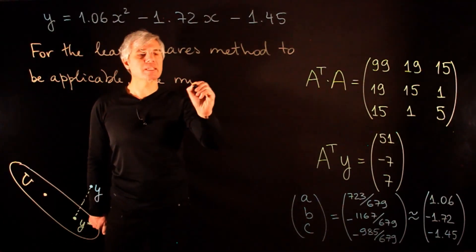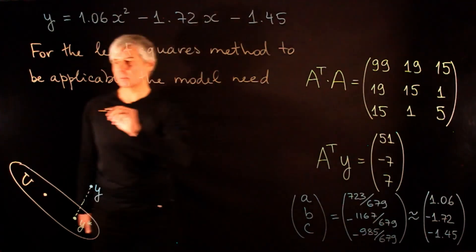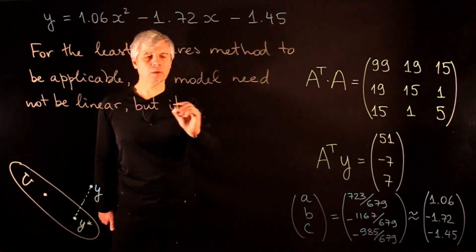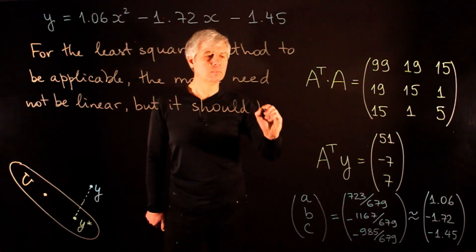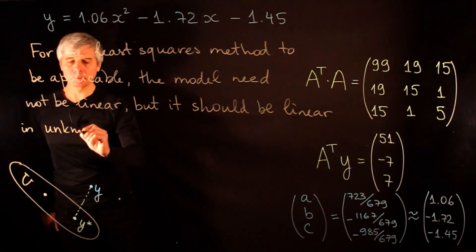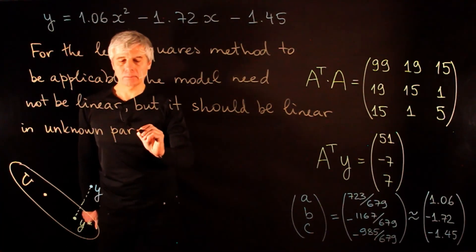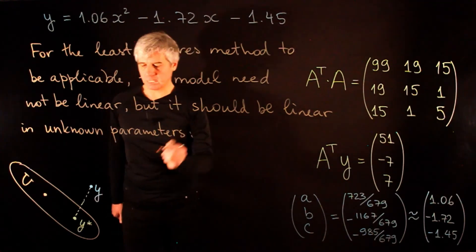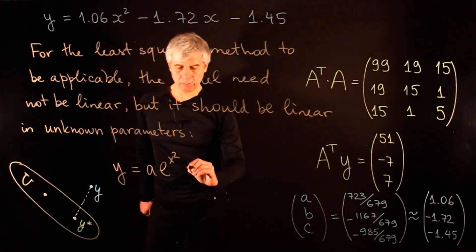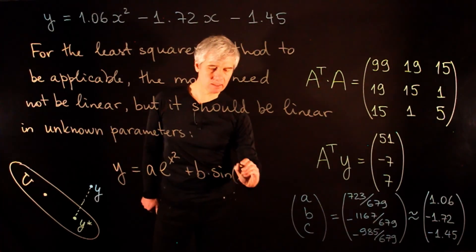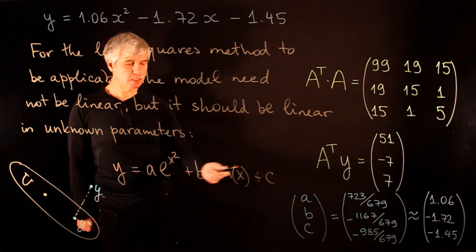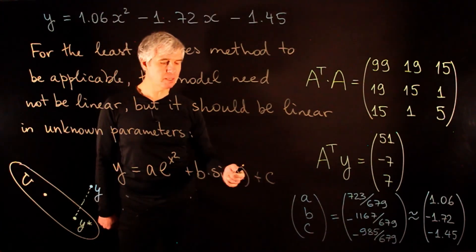For the least squares method to be applicable, the model itself need not be linear—it only needs to be linear in the unknown parameters. For example, we could have y equals A times e to the x squared plus B times sine of x plus C, where the dependence on x is highly nonlinear, but the model is linear in the unknown parameters A, B, and C to be determined. The number of parameters may be arbitrary.